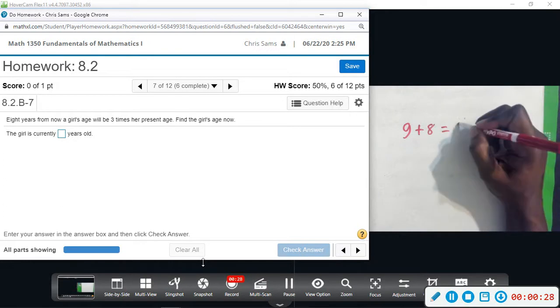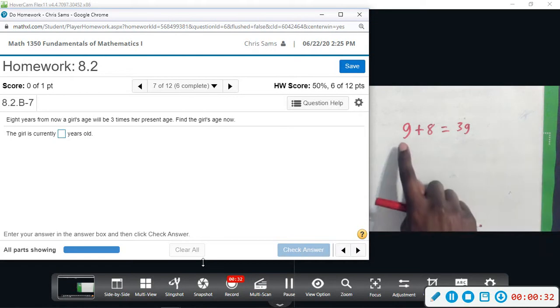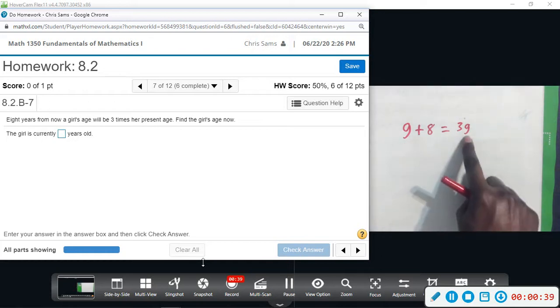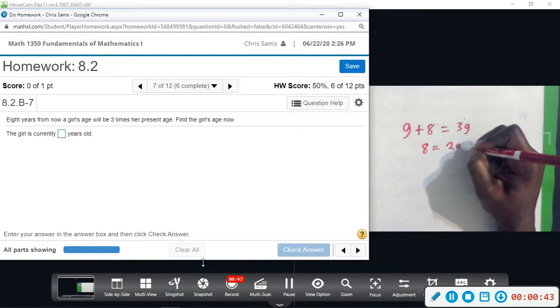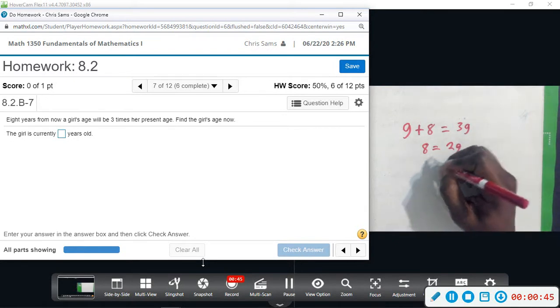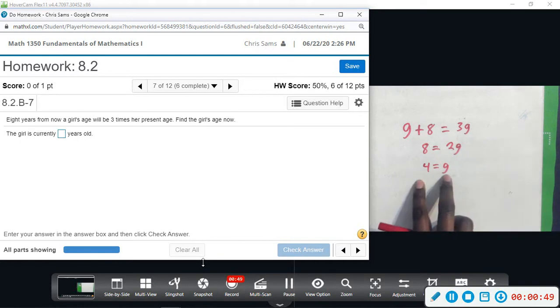You want to find her age, so her current age plus eight years is going to be three times whatever that is. So solve, we will subtract G, and that will give us eight equals 2G. And then divide by two and we get four equals G. So right now she's four, and eight years should be twelve, which is three times four. So currently the girl is four.